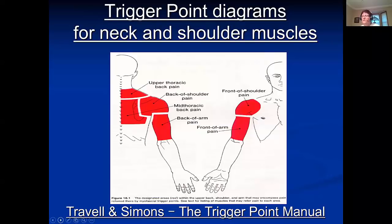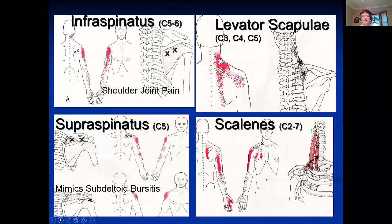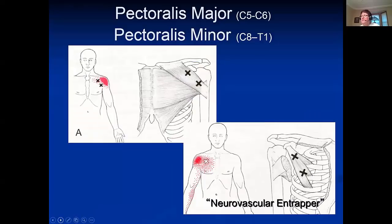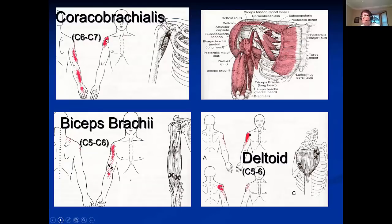These slides are just to remind you of the anatomy and neurology. Infraspinatus is C5-6, levator is C3-4-5, supraspinatus is C5, scalenes are C2 through C7. Pec major is C5-6. The pec minor can be confusing because it's right under the pec major and it's C8-T1 — it gets its nerves from the next level down, so you'll have to move the contact from where the nerve starts to where it ends to treat the pec minor.